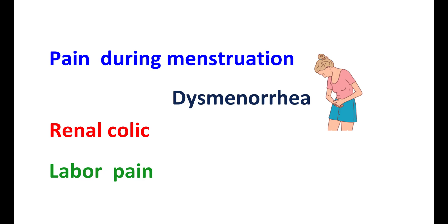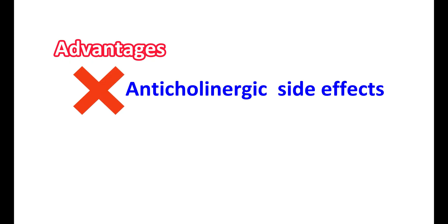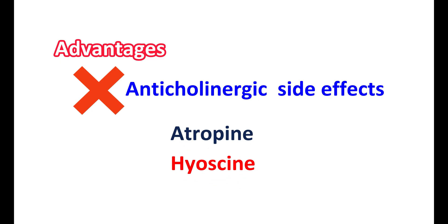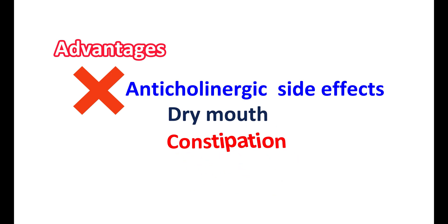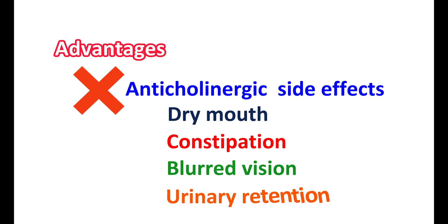In this way, drotavarine can be used in relieving the pain that is associated with smooth muscle spasm. This medication has few advantages compared with other antispasmodic agents. First, it does not have the anticholinergic side effects that can be observed with medications like atropine or hyoscine. These two medications are anticholinergic agents that produce important side effects like dry mouth, constipation, blurred vision and urinary retention. Such troublesome side effects are not observed with drotavarine.